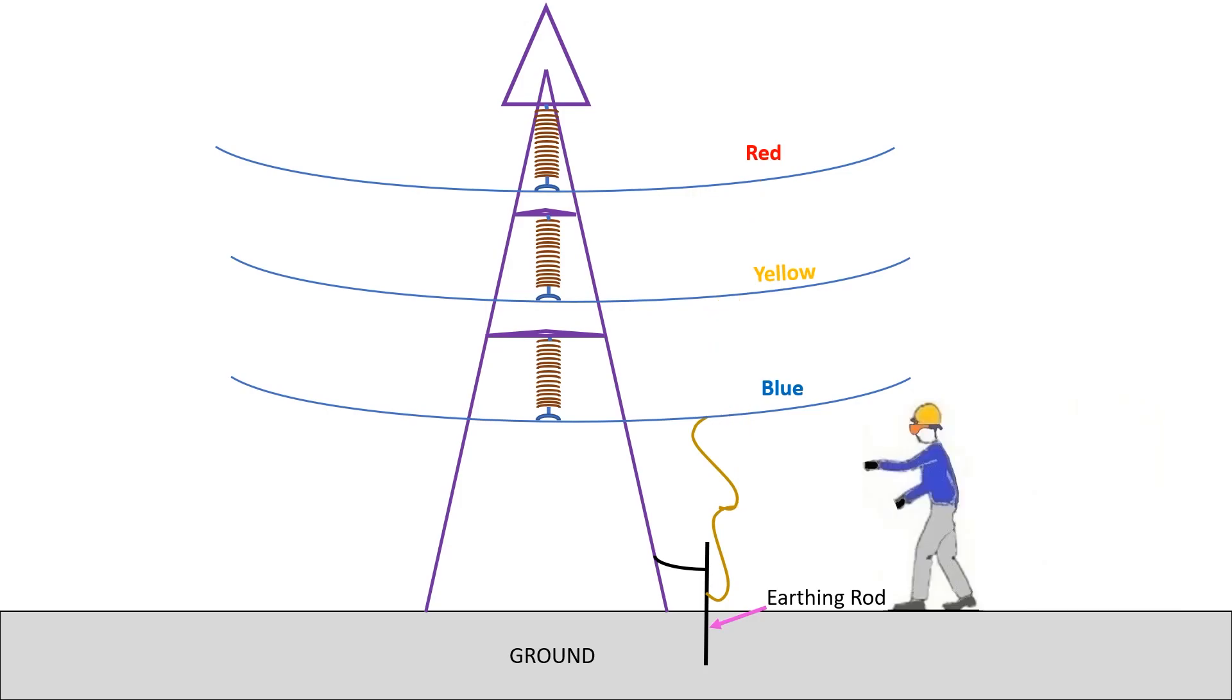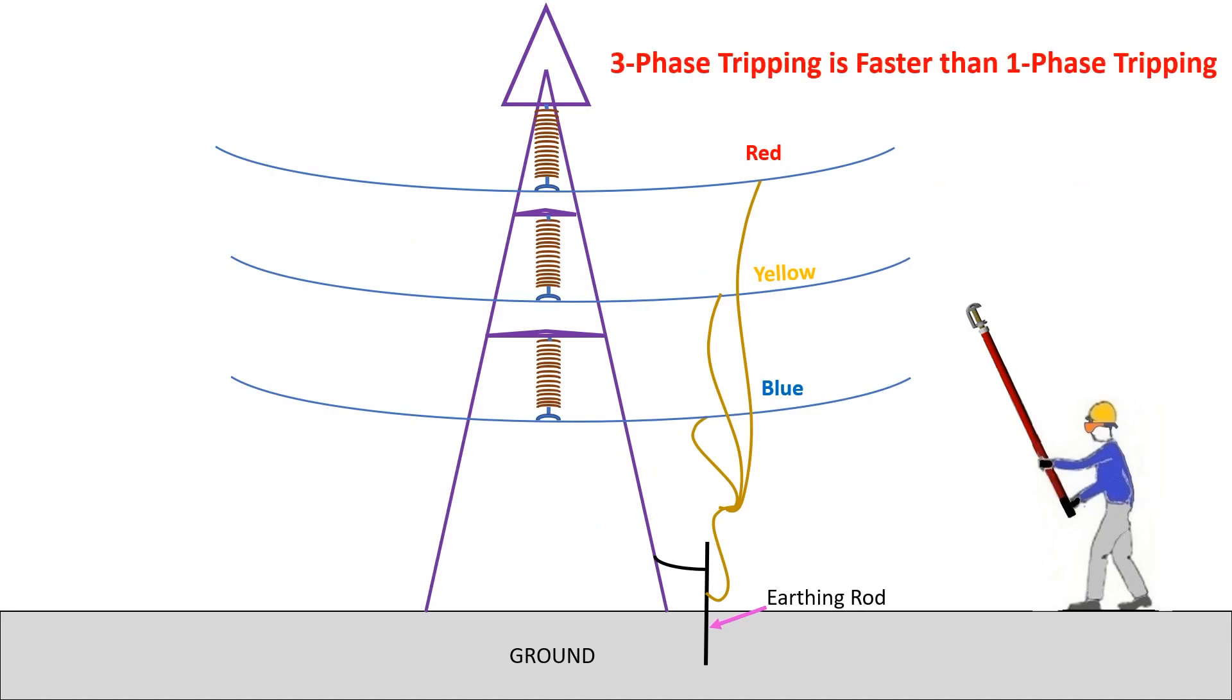Number one: the worker may touch the other phases by mistake. If other phases are not grounded, the worker will be subjected to electrical shock. Number two: three-phase tripping is faster than single-phase tripping, so the fault will be cleared soon.